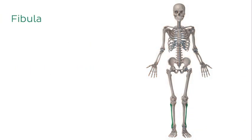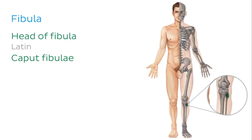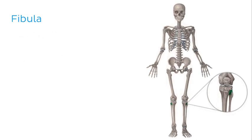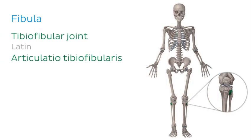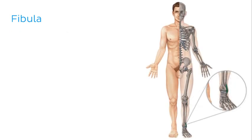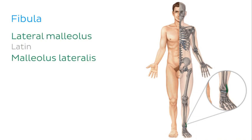The fibula is the laterally situated and more slender of the two long bones of the leg. At its proximal end is the head of the fibula, which articulates with the tibia on the inferolateral surface of the tibial condyle at the tibio-fibular joint. At the distal end of the fibula is a bony prominence called the lateral malleolus, also known simply as the outer ankle.